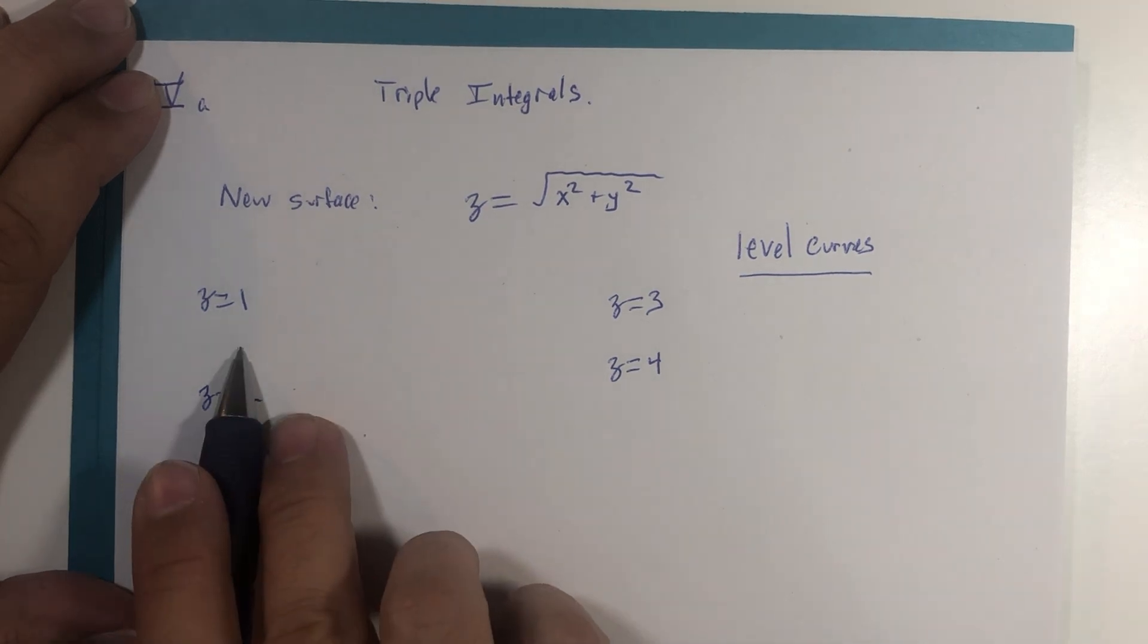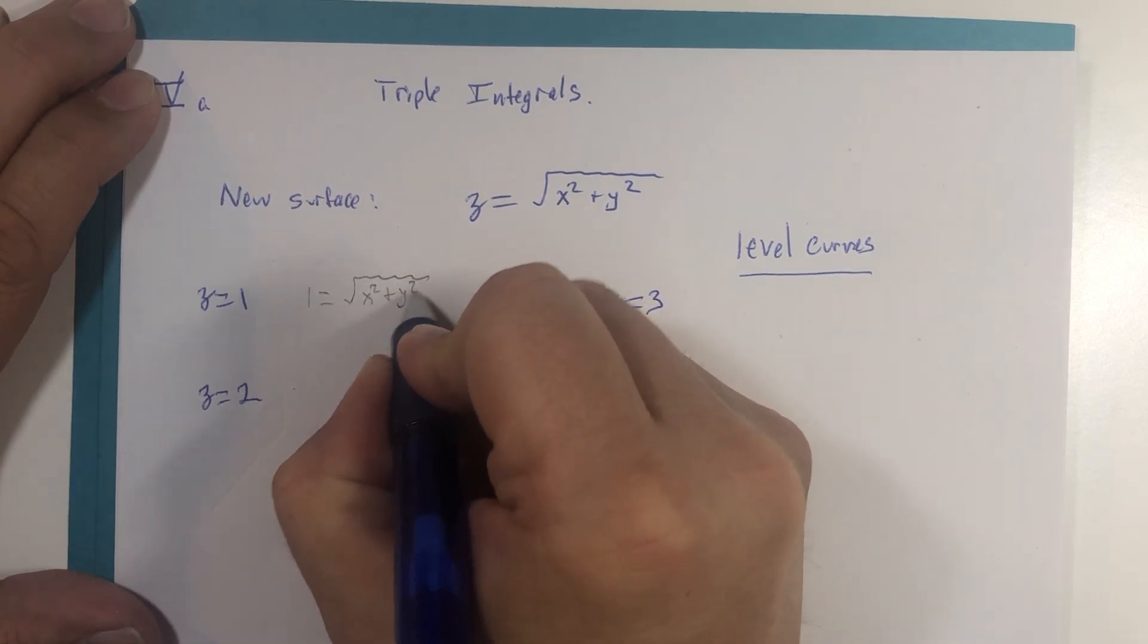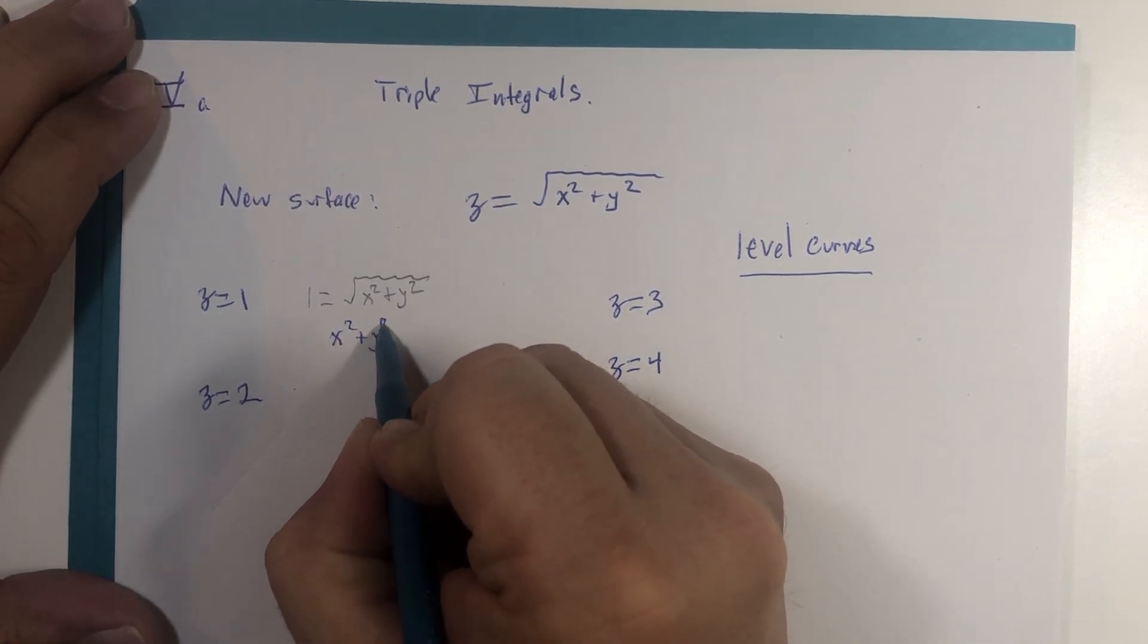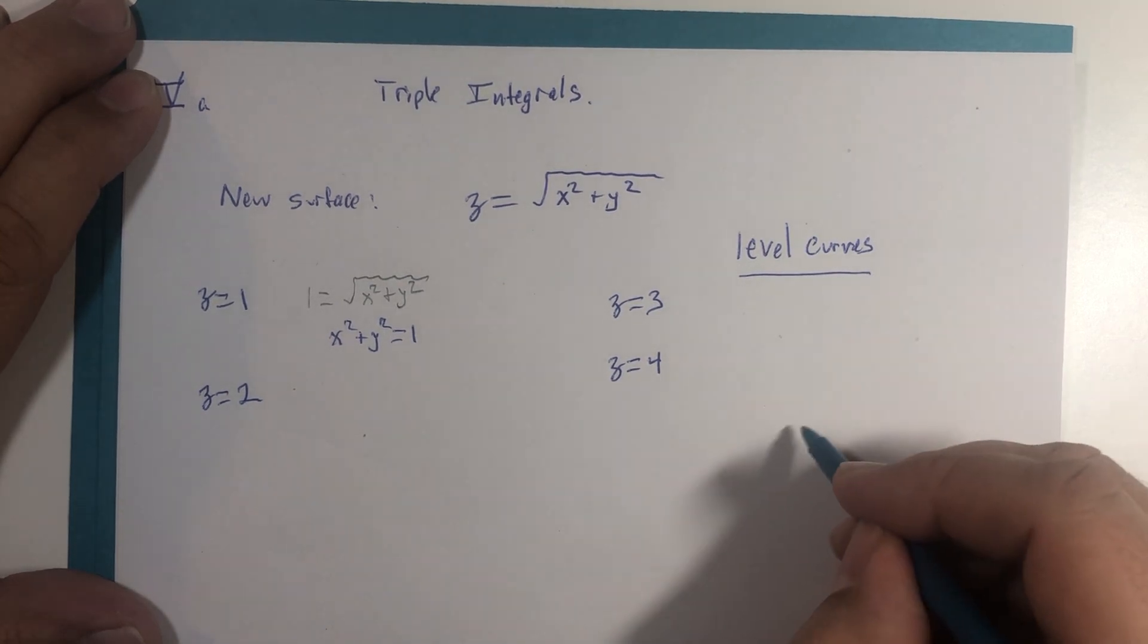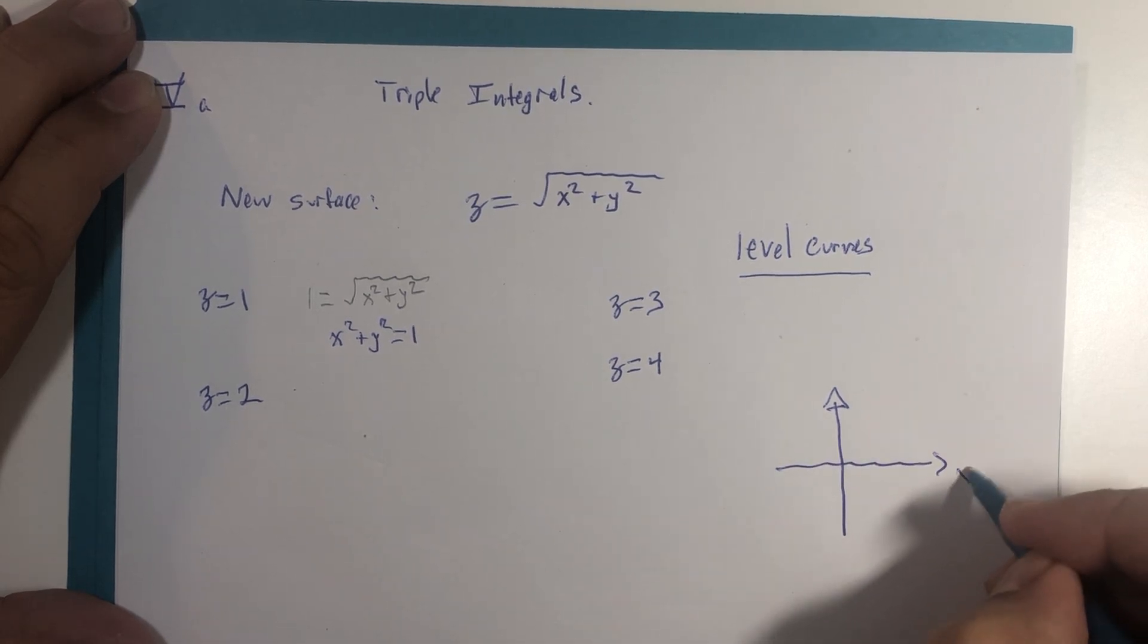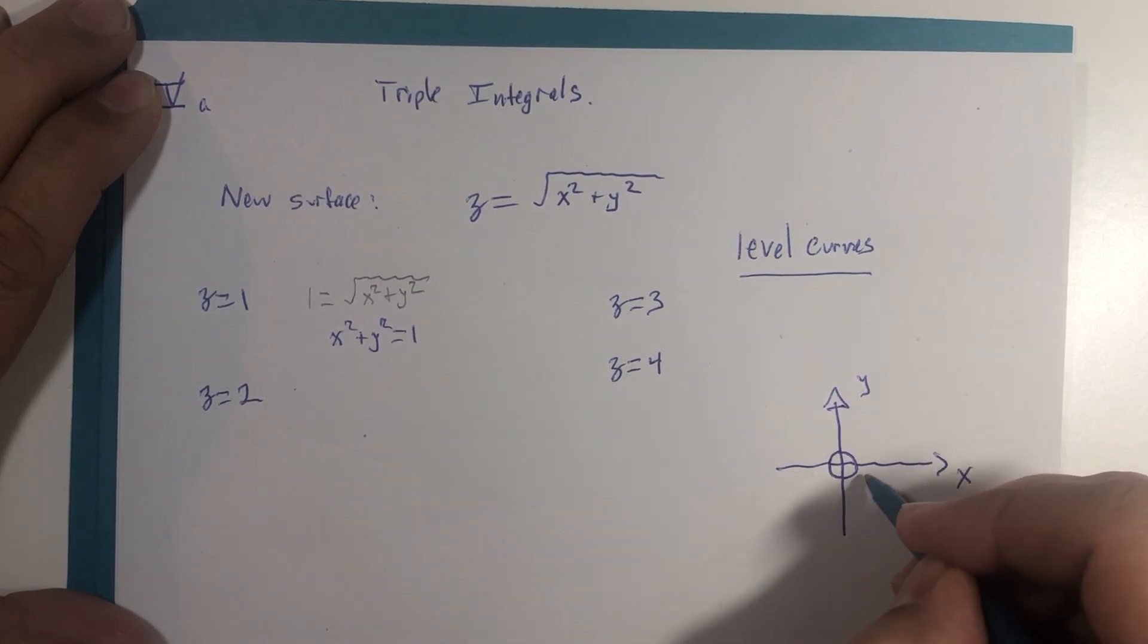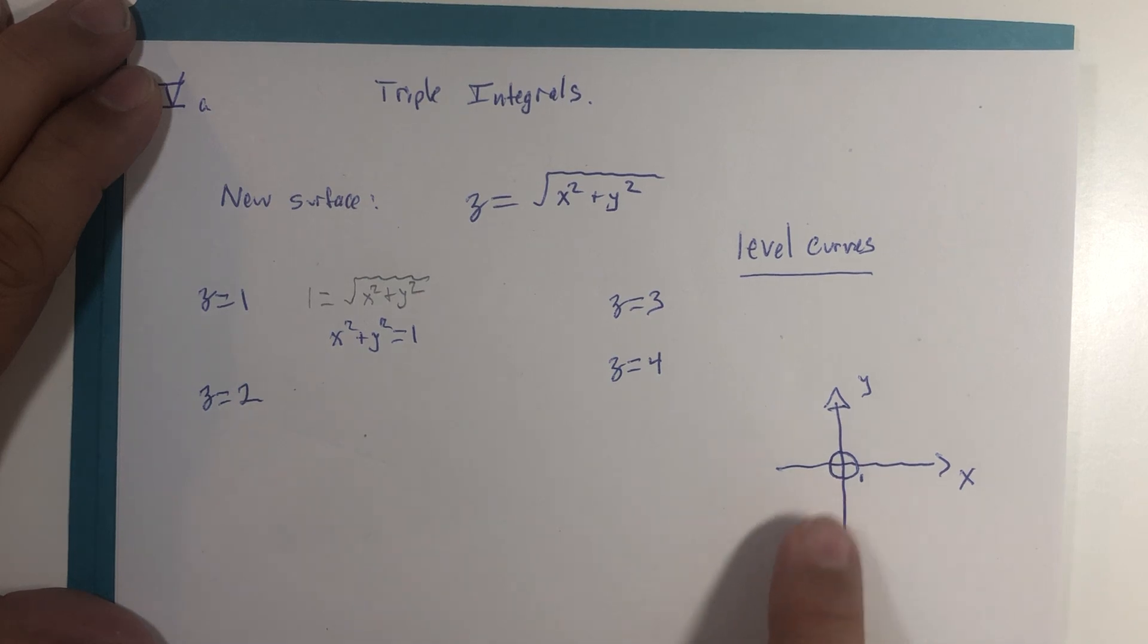So if z equals 1, then we would have 1 equals the square root of x squared plus y squared, which is the same as x squared plus y squared equals 1. That's a circle. So this graph using a level curve, x and y, would have a small circle of radius equals 1 if we let z equals 1. So that circle is really one unit above the xy plane.